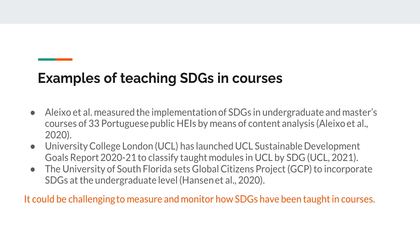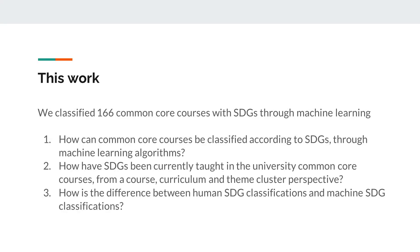Higher education plays an essential role in achieving SDGs. However, there are only scattered studies on monitoring how universities holistically promote SDGs through their curriculum. The main purpose of this study is to investigate the connection of existing Common Core courses, or general education courses, in a university to SDG education.